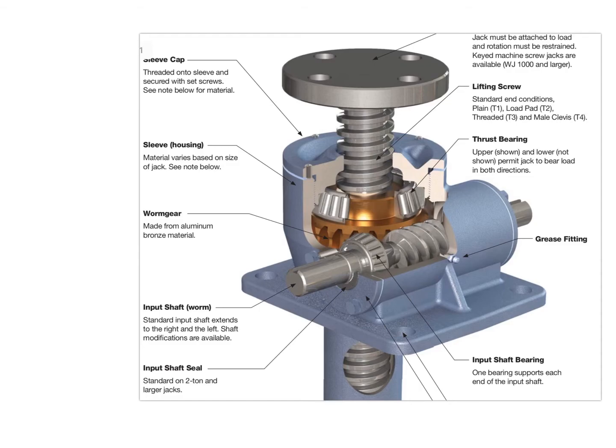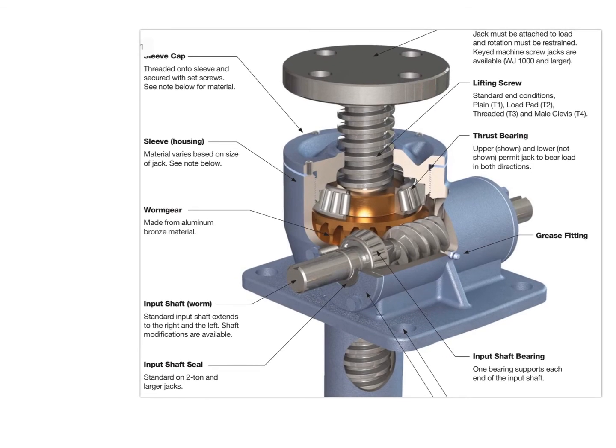Actually in this figure you have two thrust bearings which permit the jack to bear load in both directions. That's very important. Had this thrust bearing not been there, then the lifting screw cannot take loads in both directions. It would be able to take the loads only in one direction, but since we have two thrust bearings it helps us in taking load in both directions.